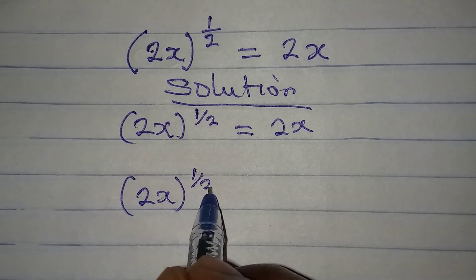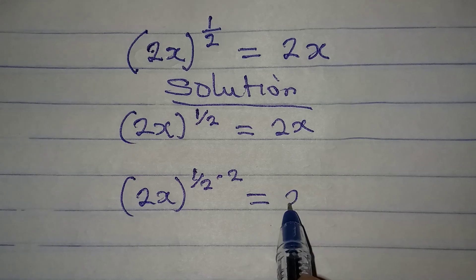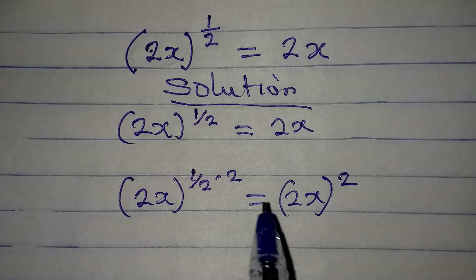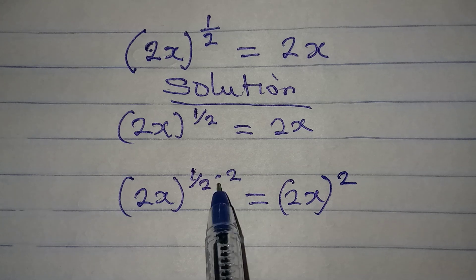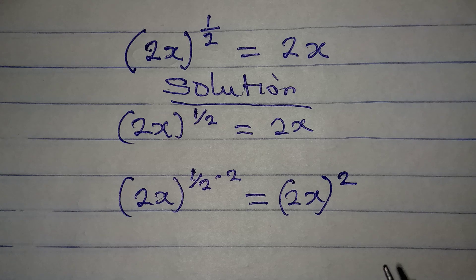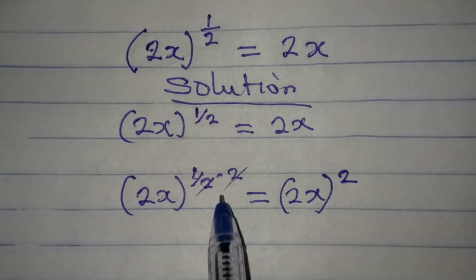So we have 2x to the power of 1 over 2 multiplied by 2, which is equal to 2x in brackets to the power of 2. Now, because I introduce this square here, it has to reflect on the right.